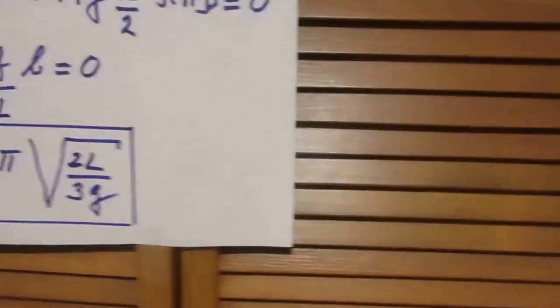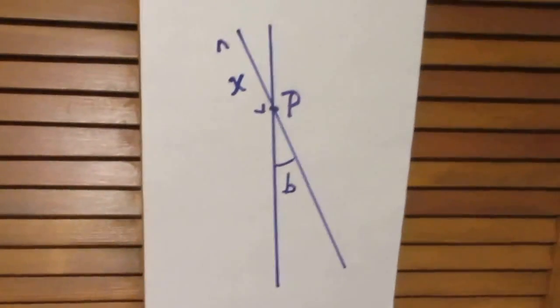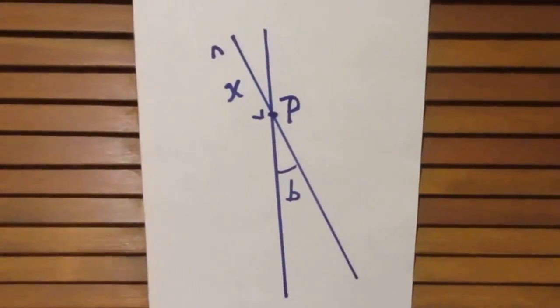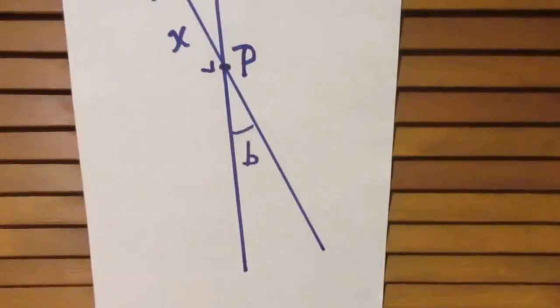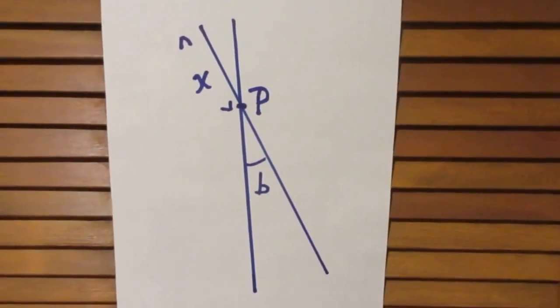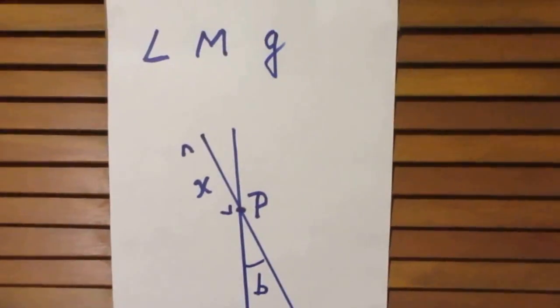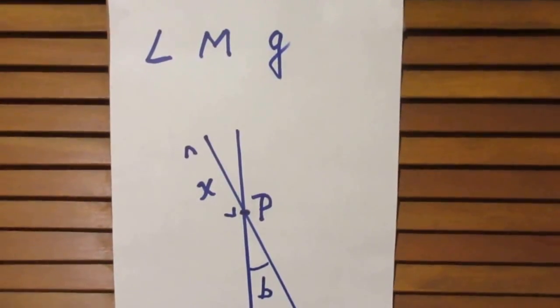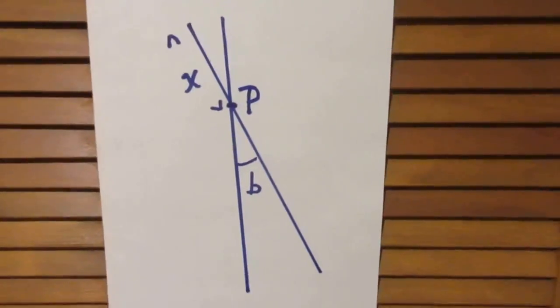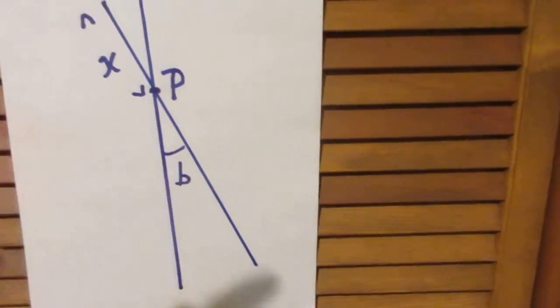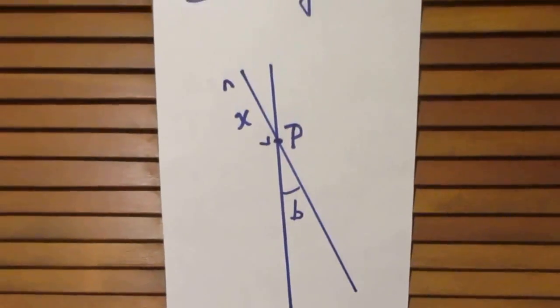Now comes this week's problem, much harder. Same rod, same length L, same mass capital M, same gravitational acceleration g, but now we are going to oscillate it at a point which is not the end.